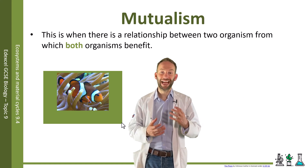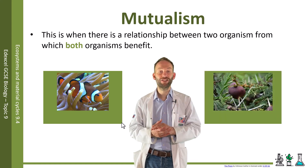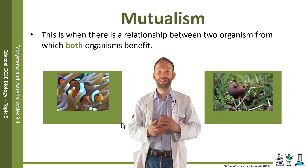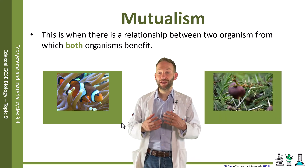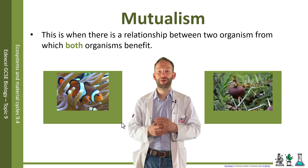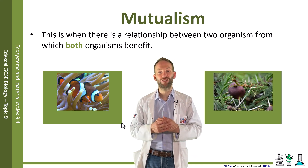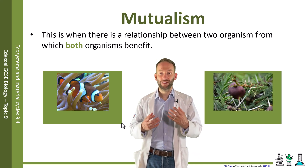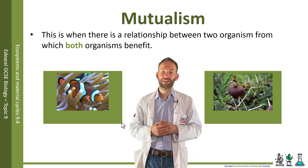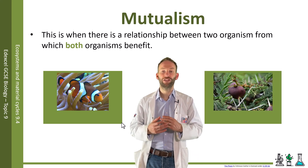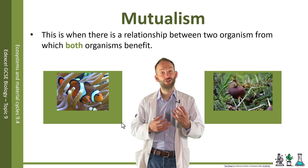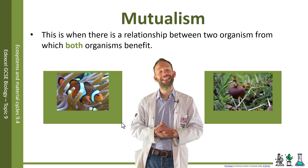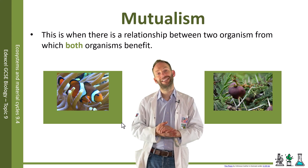Here's another example: the ants and the acacia tree have a mutualistic relationship. The ants benefit by living in the acacia tree, and the tree benefits when the ants consume the insects that normally eat the leaves of the trees.